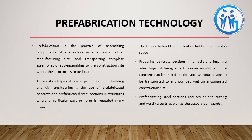We have a structure and construction location, then we have a factory where we manufacture the assemblies and sub-assemblies. The most widely used form of prefabrication in building and civil engineering is the use of prefabricated concrete and prefabricated steel sections in structures.